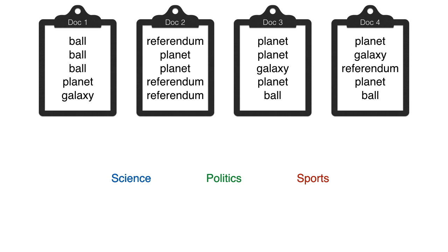These documents don't make a lot of sense, but that doesn't matter. You can still think of certain topics based on the words they contain. Feel free to pause and think about what topics you'd assign to each document. I looked at the first one and thought it looks like sports because it has ball and galaxy — maybe for the LA Galaxy soccer team — so I went for sports. The second has referendum and planet, so maybe politics. The third has planet and galaxy, so science. The fourth also has planet and galaxy, so let's go for science.